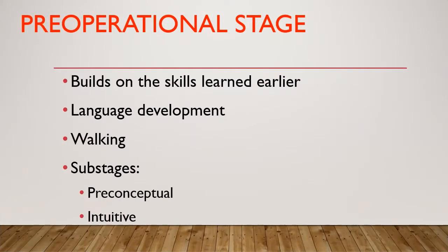The pre-operational stage builds on the skills learned earlier, such as language development and walking. Its sub-stages are the pre-conceptual and intuitive stages. This stage begins around age 2 and lasts until approximately age 7. During this period, children are thinking at a symbolic level but are not yet using cognitive operations. For example, role-playing is common at this stage — a child may pretend to be a parent, teacher, or doctor.